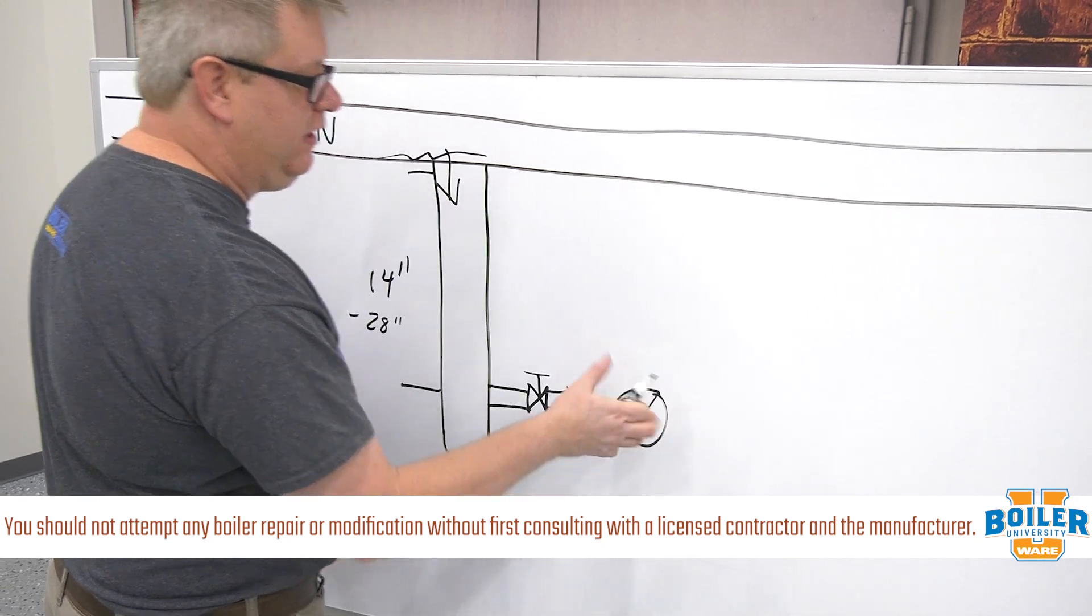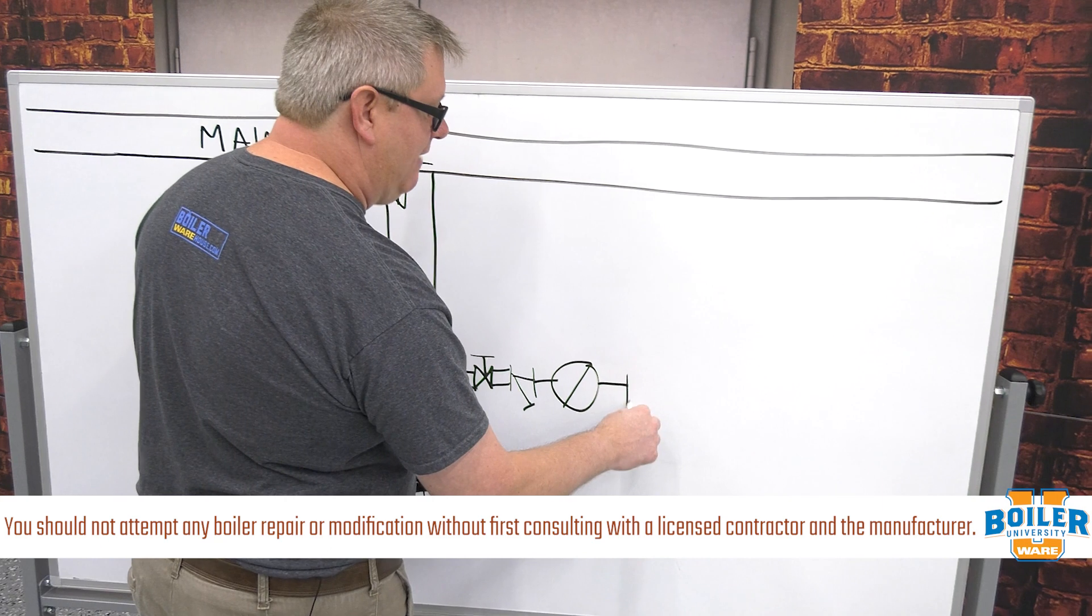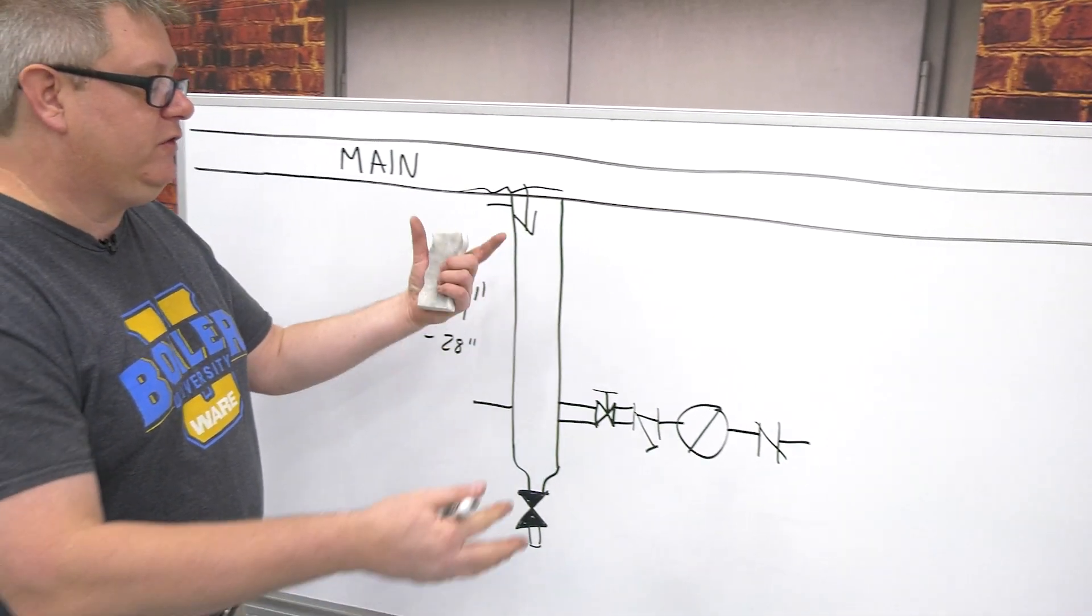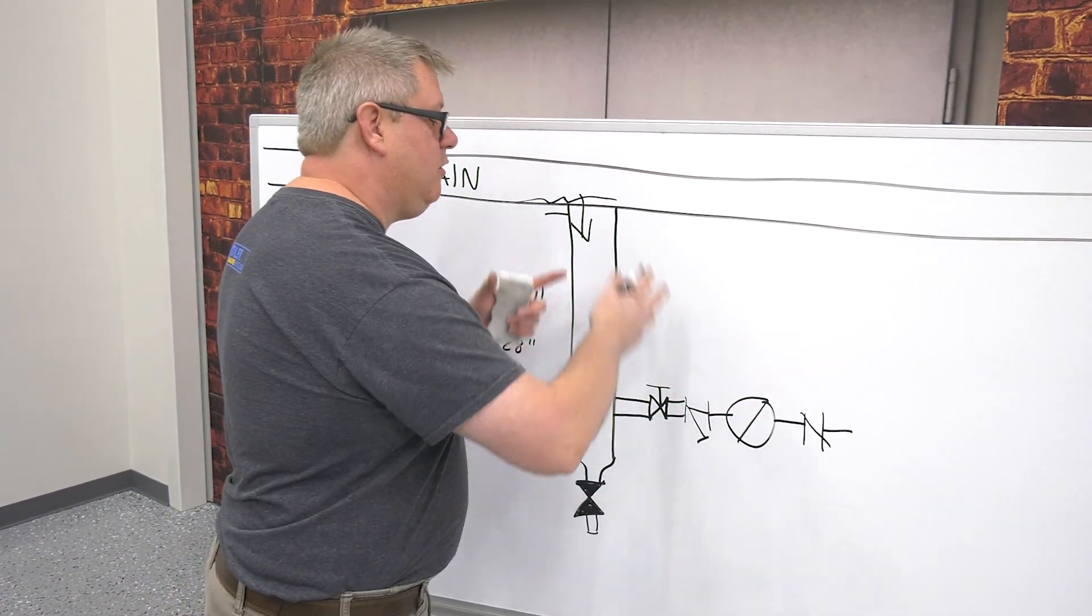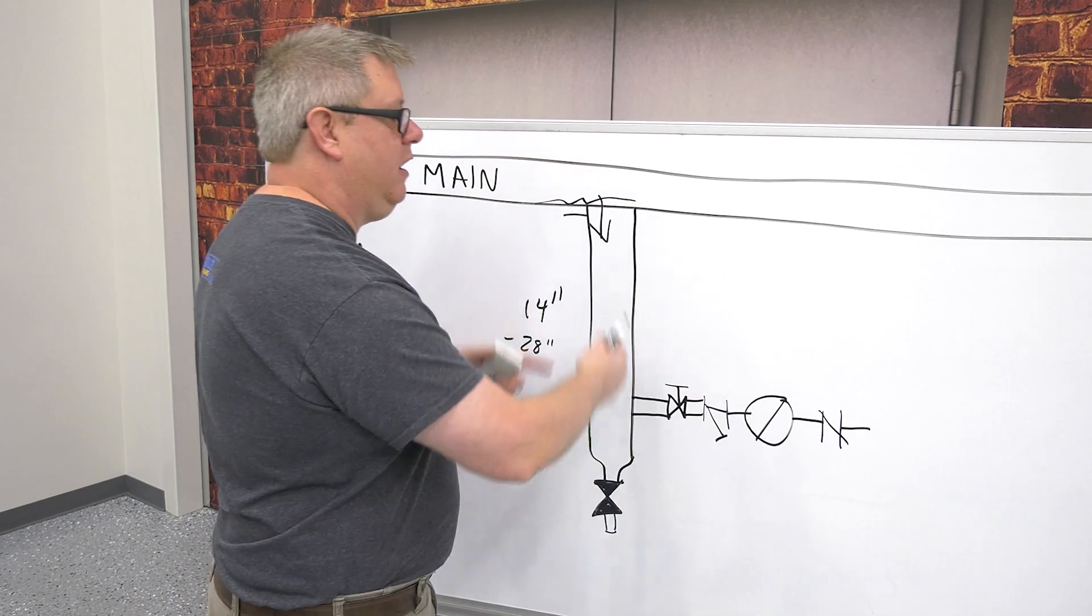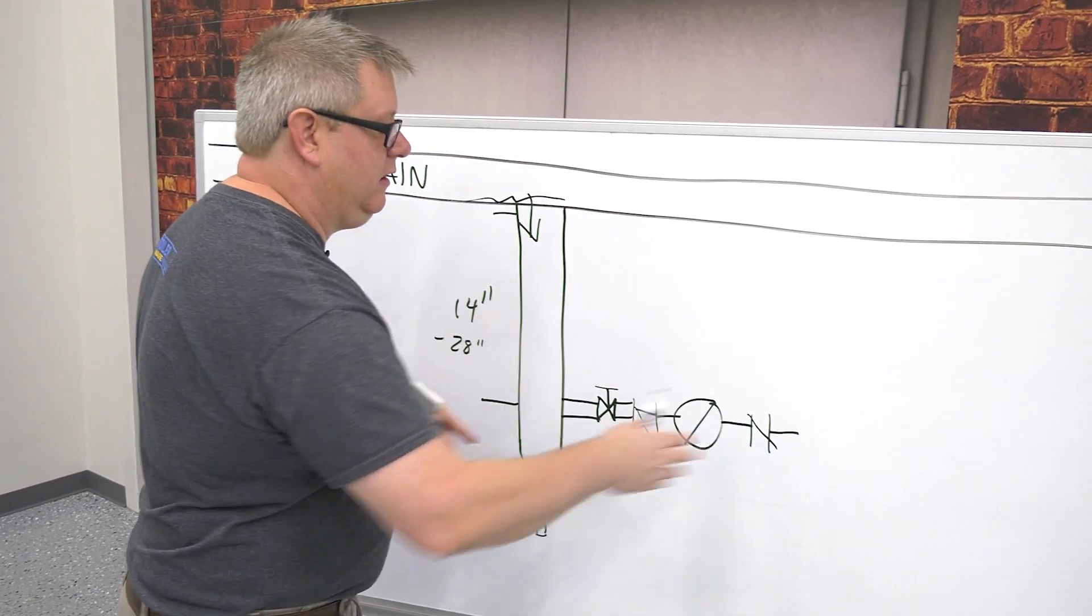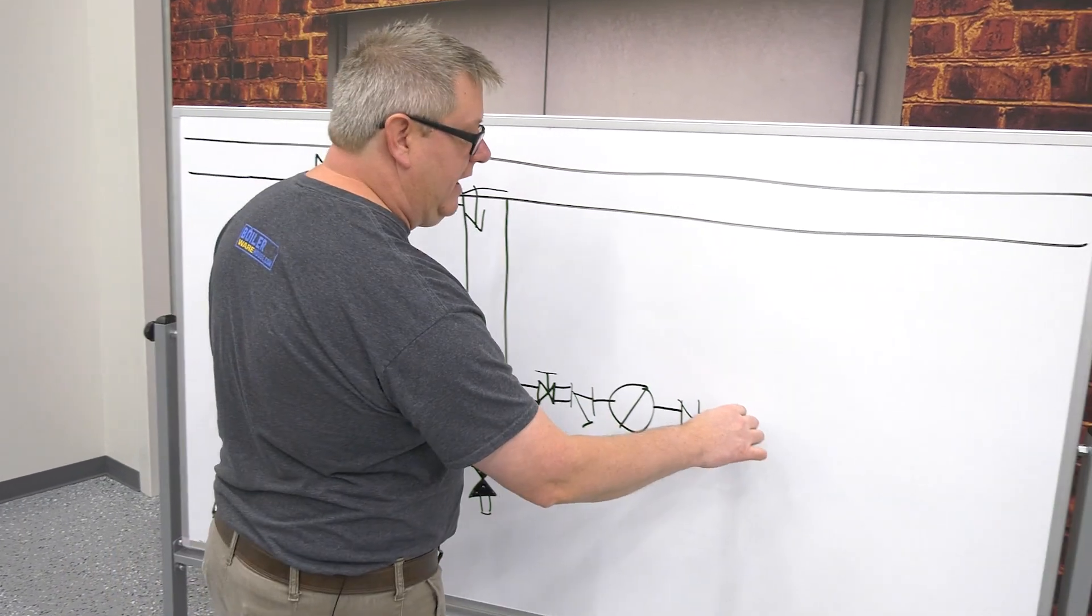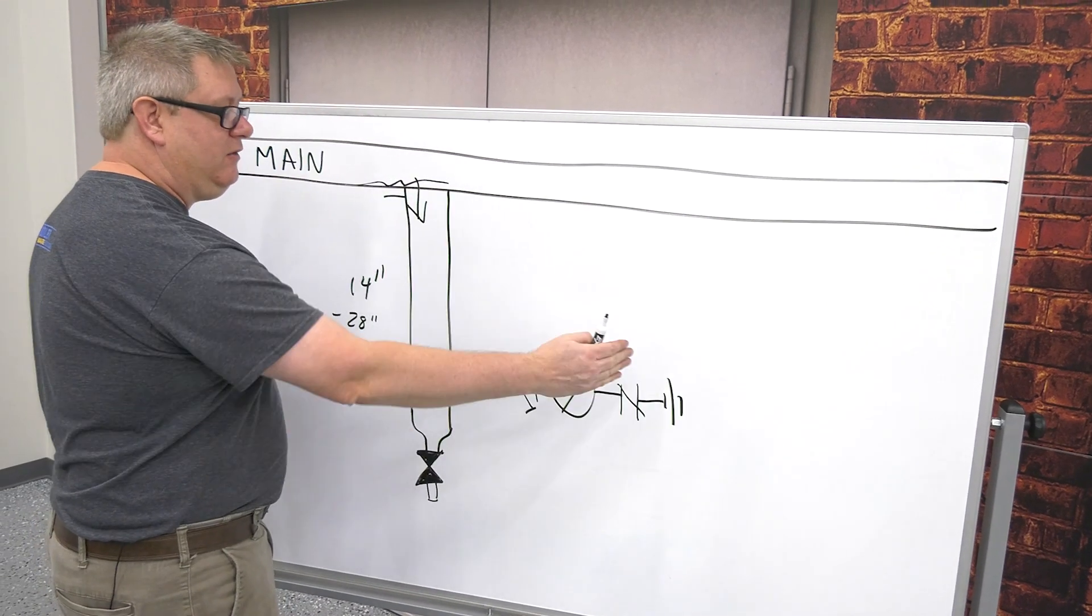On the outlet of the trap, we're going to have a check valve. And the benefit of a check valve on the outlet of a trap is when the system's shutting down, there's no way for the vacuum in the steam system to suck condensate back into the header. So it's just there to make sure everything only goes in the correct direction. We're generally going to have a union so that we can disassemble this as needed.